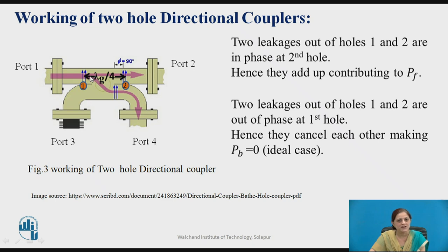Whereas the two leakages out of holes 1 and 2 are out of phase at the first hole. Hence they cancel each other, making the back power equal to zero, which is true for the ideal case of the directional coupler.